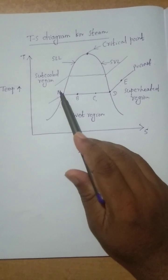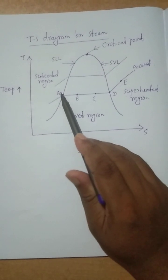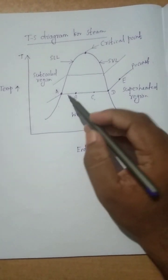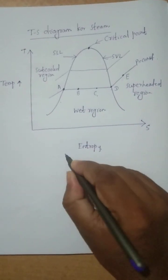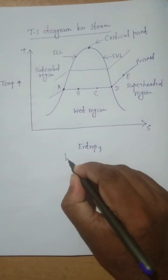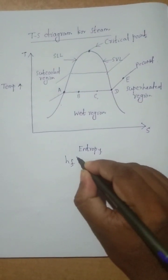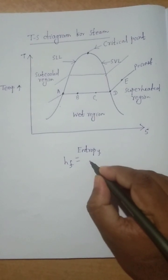If the working substance is at point A and you calculate the enthalpy value, that enthalpy value is called hf, where hf means enthalpy of liquid.